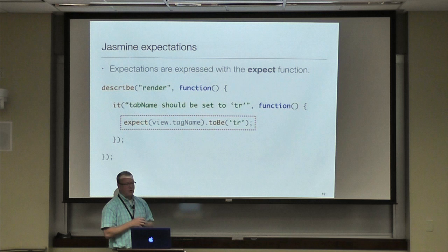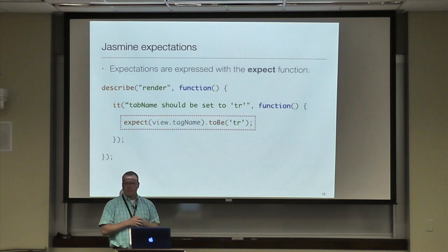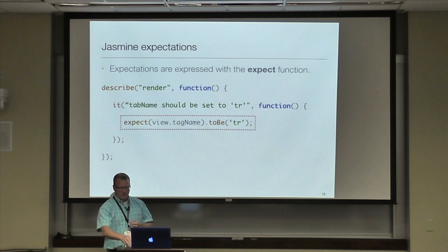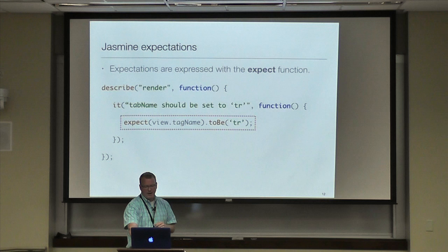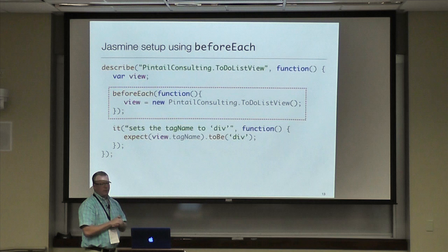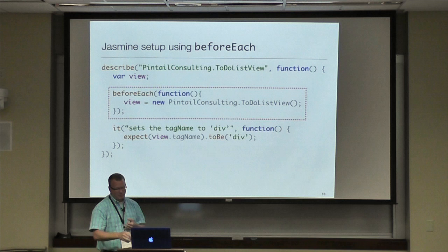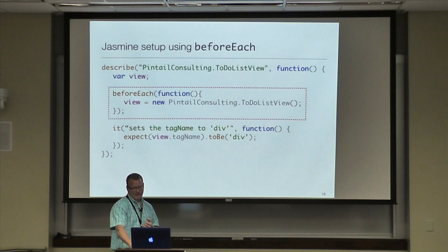Within that specification, you might execute the system under test and then verify some sort of state, or maybe verify a testing spy that you may have set up. Jasmine can also use the concept of `beforeEach`, which is another function within a describe block that sets up your test fixture. This `beforeEach` will run each time for each specification within the describe block or in a nested describe block.